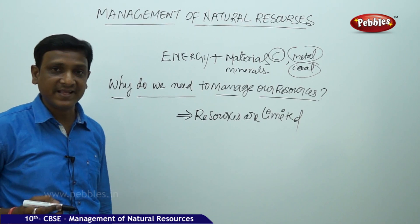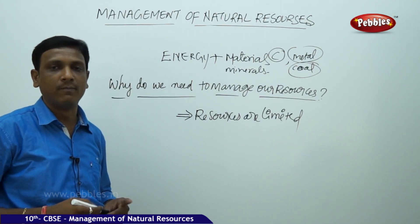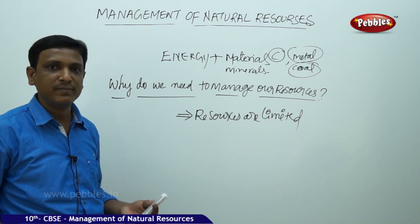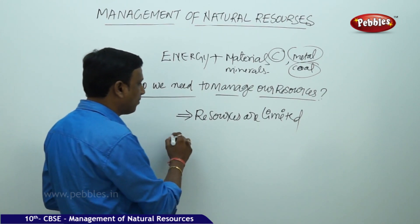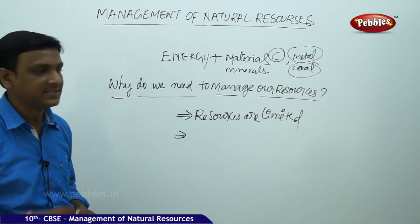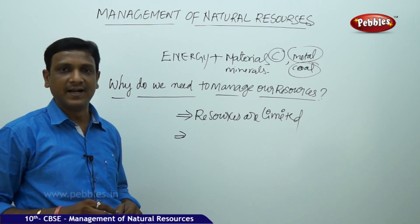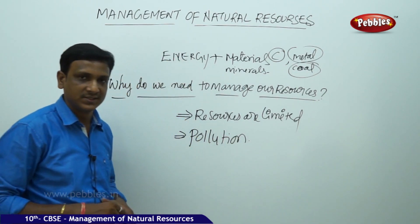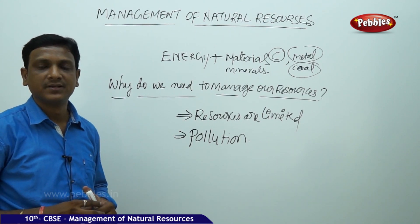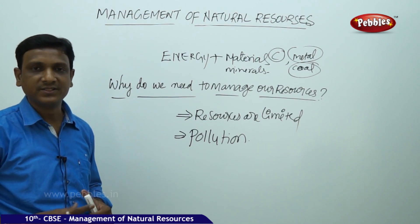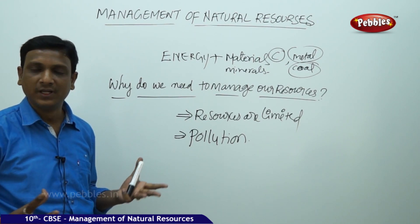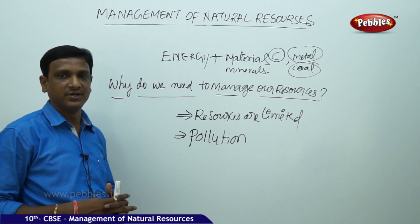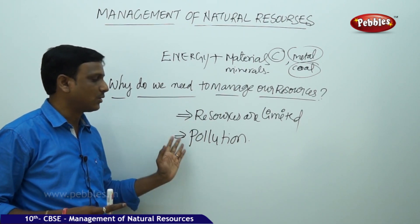Certain resources are renewable, but even then it takes a very long time for their formation — millions of years. So if you use all of it quickly, you have to wait millions of years for it to form again. Resources are limited — that is one reason to manage them. The second reason is pollution. If you use natural resources at a very high rate in very less time, they cause pollution: air is polluted, water is polluted, deforestation leads to less rainfall, increase in global temperature, and the greenhouse effect. So the problems caused by over-usage of natural resources are many.